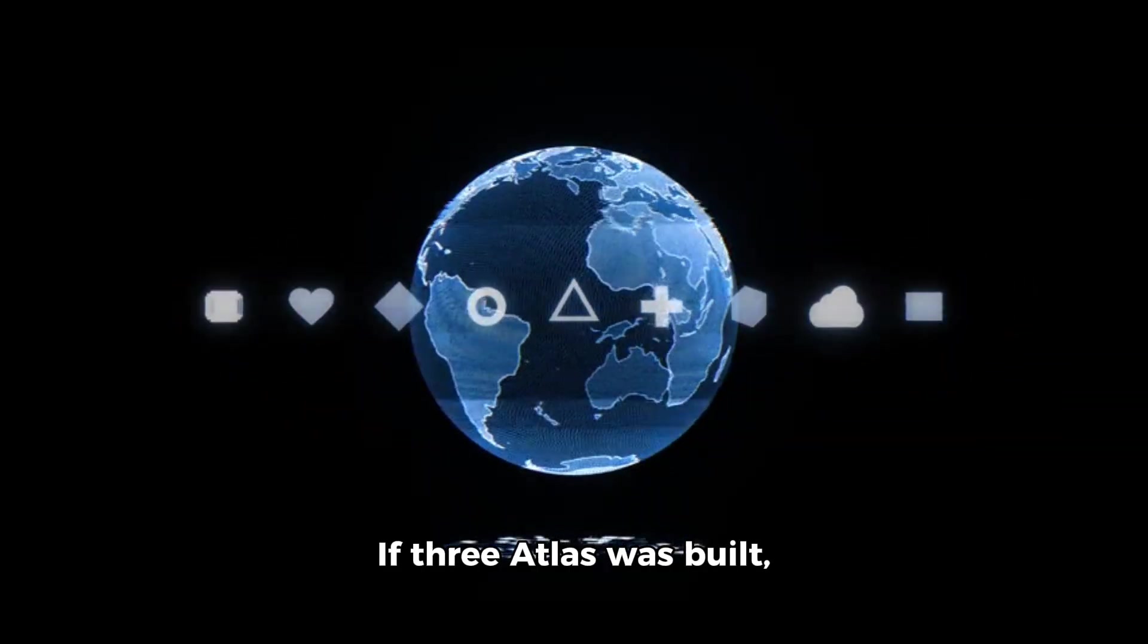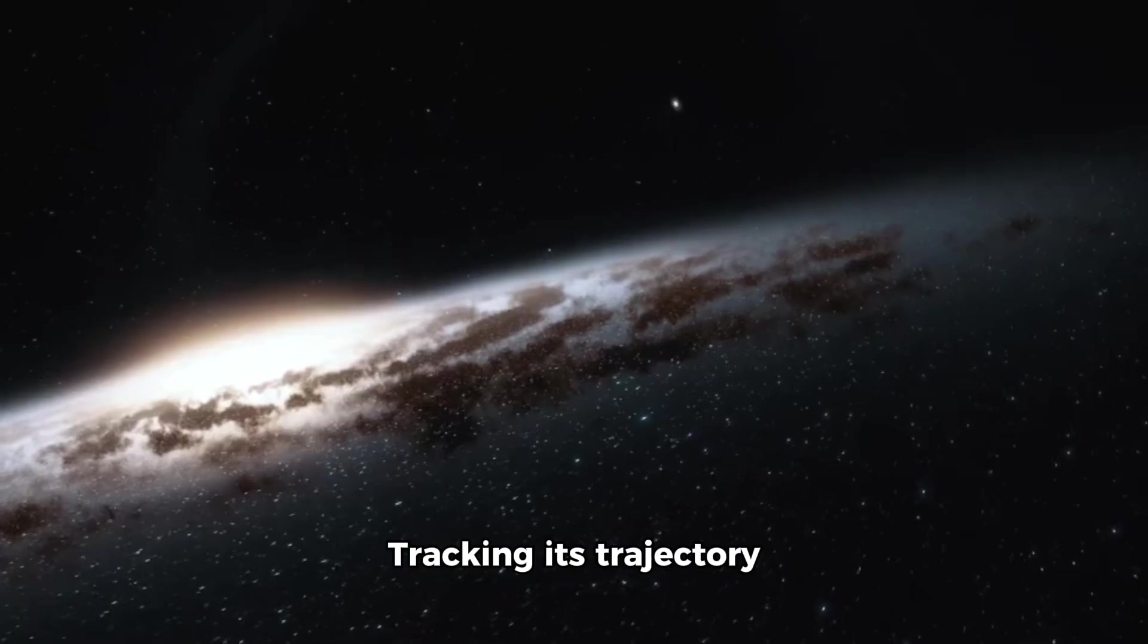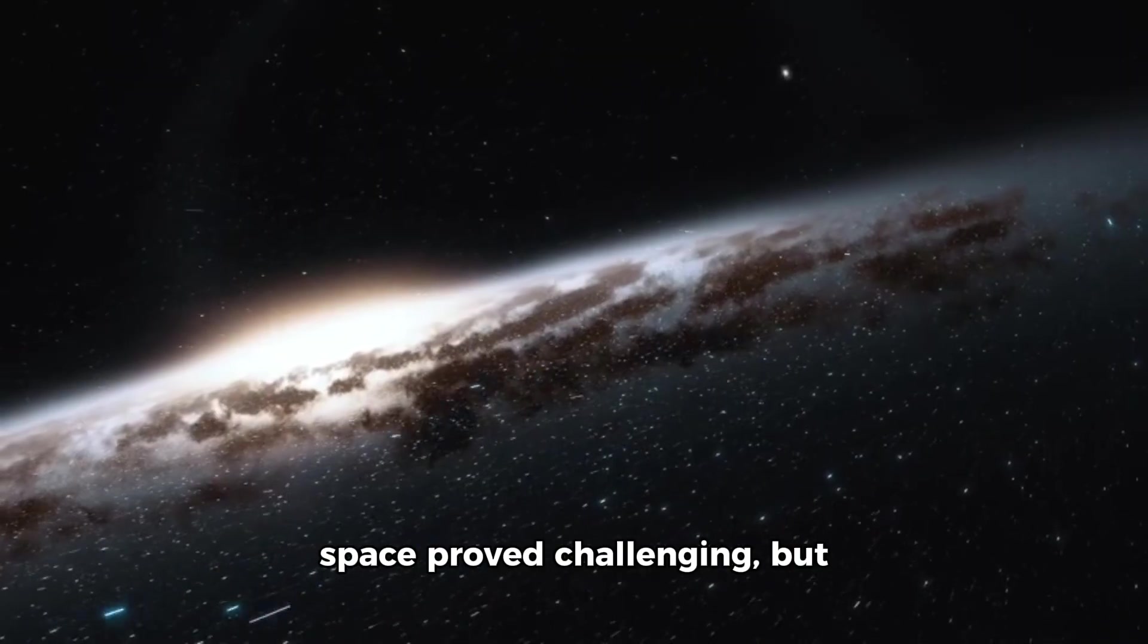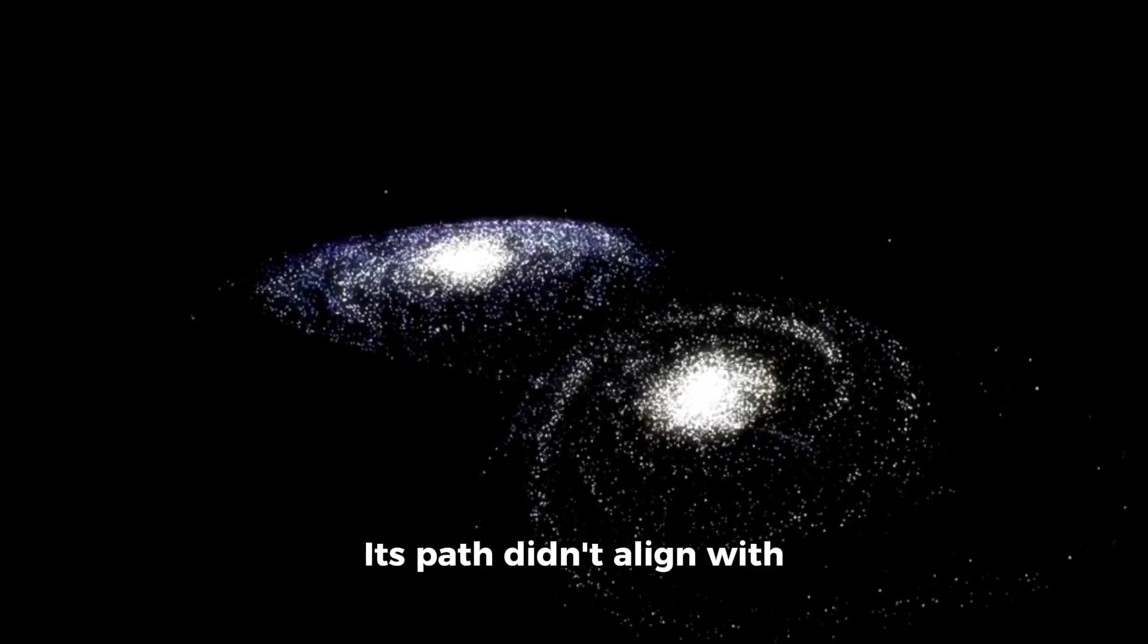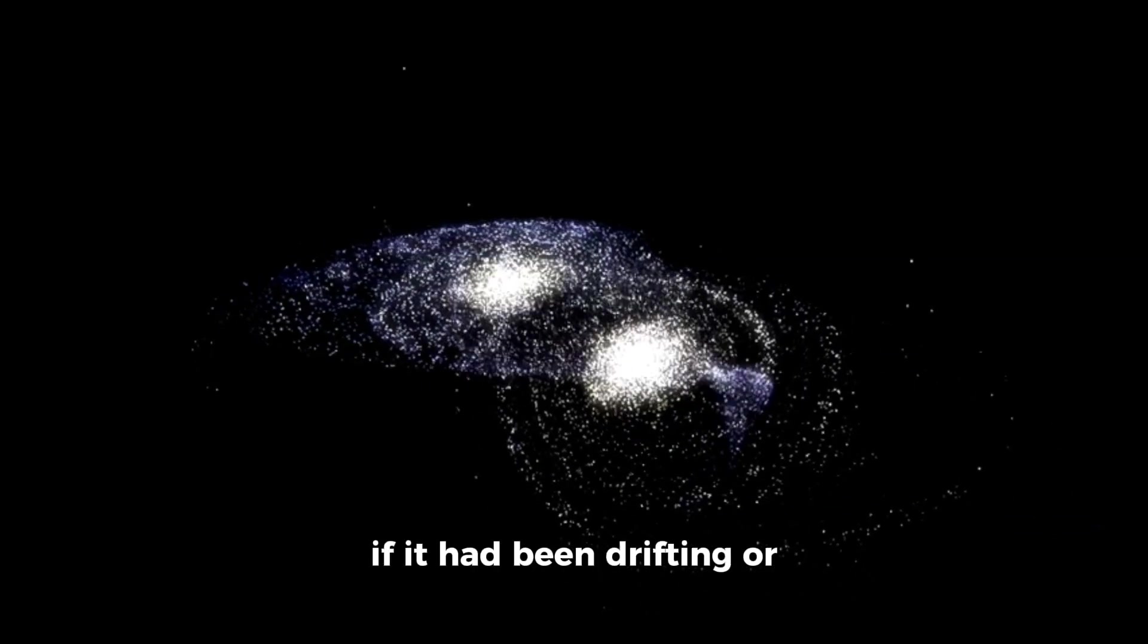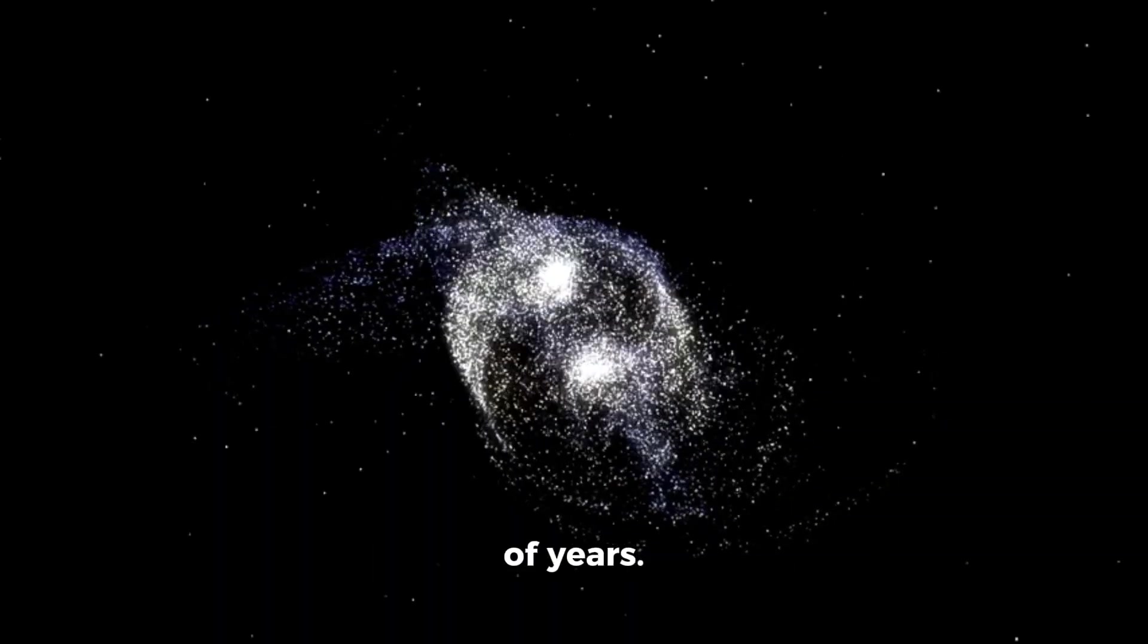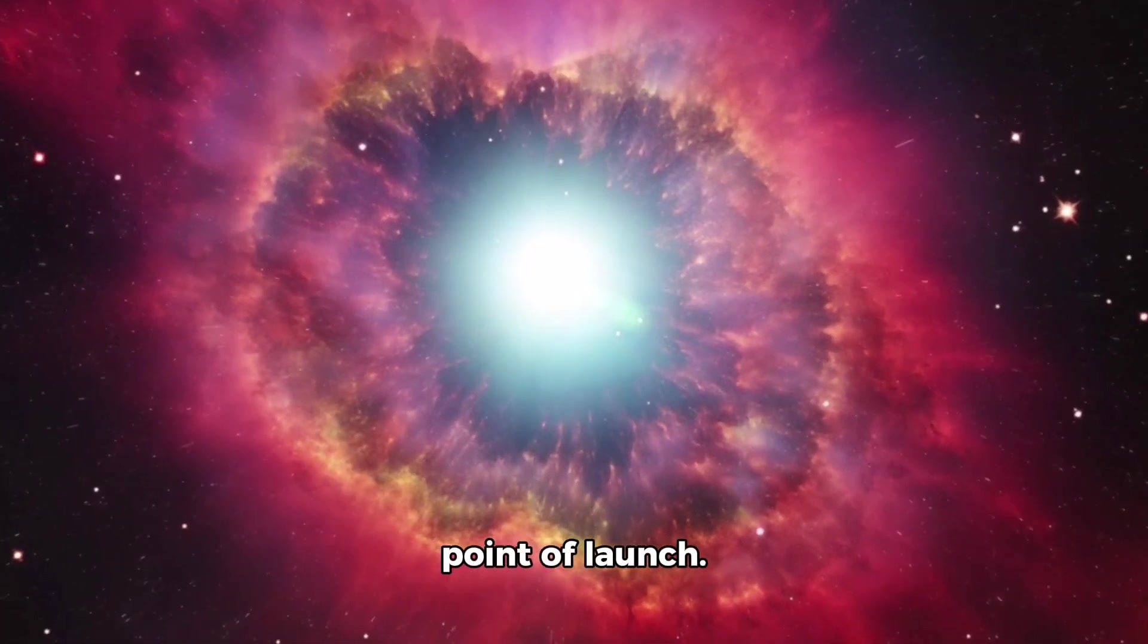If 3i Atlas was built, it was built by something or someone out there. Tracking its trajectory backward through interstellar space proved challenging, but the effort yielded yet another layer of intrigue. Its path didn't align with any known stellar system in our local neighborhood, as if it had been drifting or traveling through empty space for tens of thousands of years. No home star, no clear point of launch.